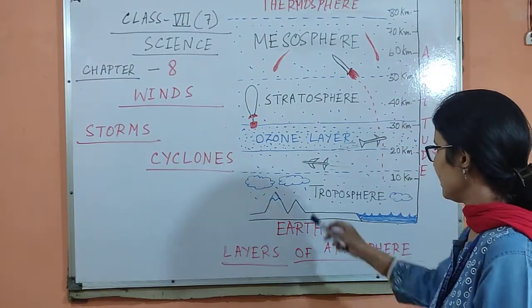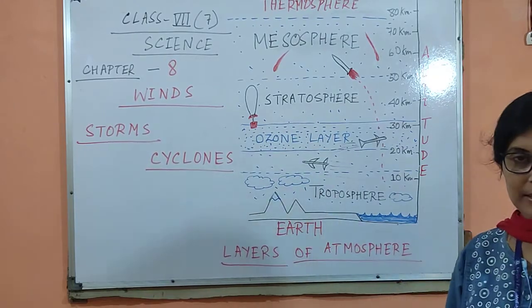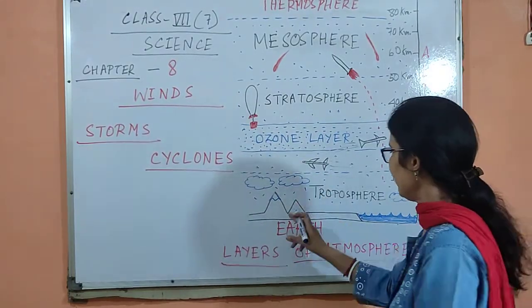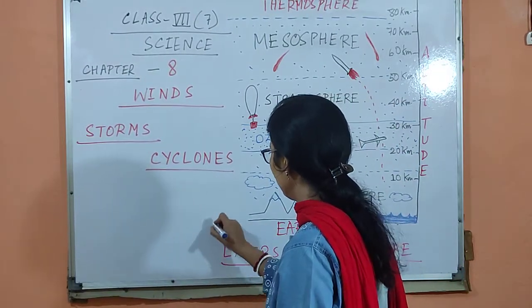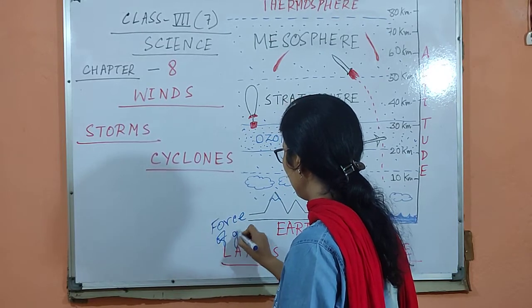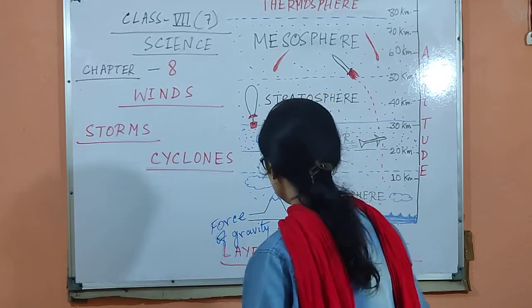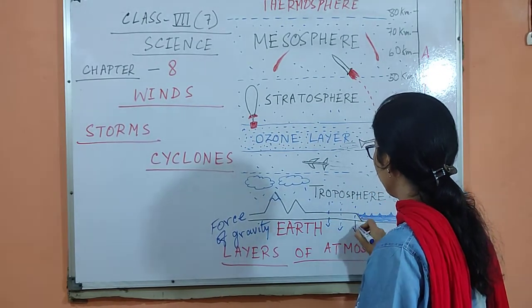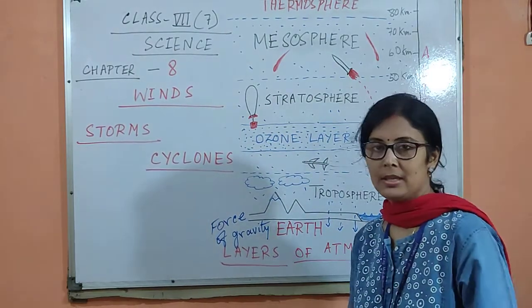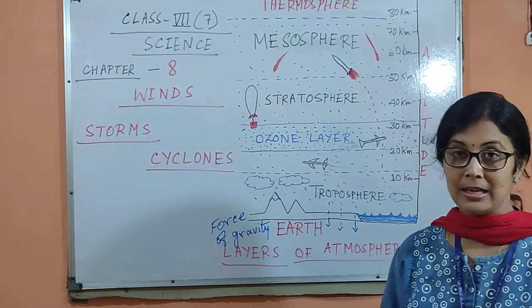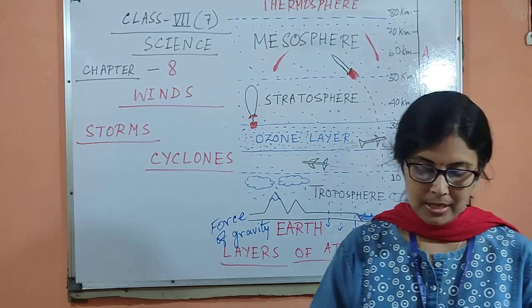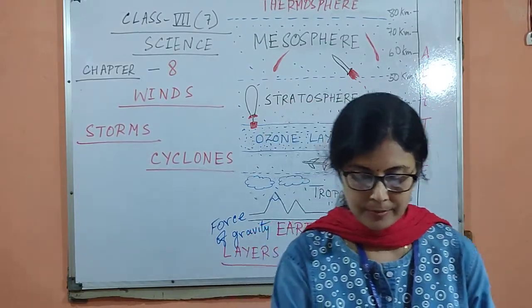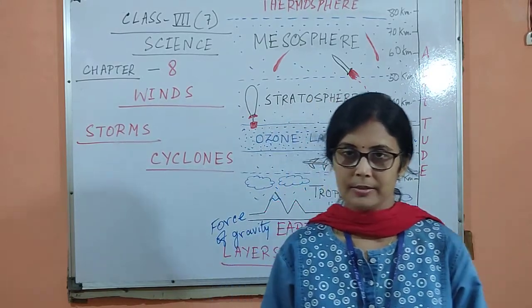Why is it so dense? Because the molecules of gases are pulled towards the earth by the gravitational force. Due to the force of gravity of the earth, these particles of gases are attracted downward, and therefore this layer is the most dense — most of the particles of gases are concentrated in it. In this layer, the gases consist of around 70% nitrogen, around 21% oxygen, around 0.03% carbon dioxide, and the rest other gases.